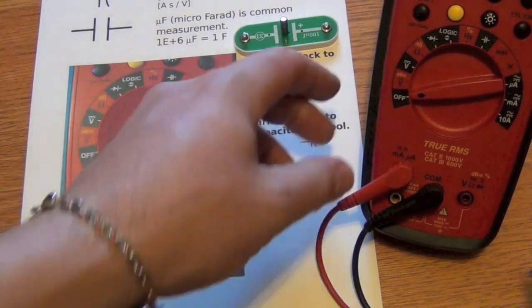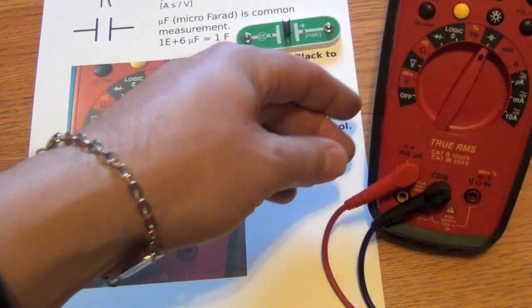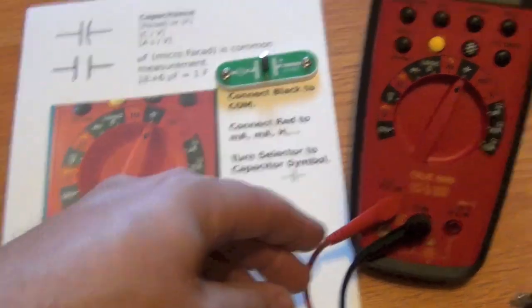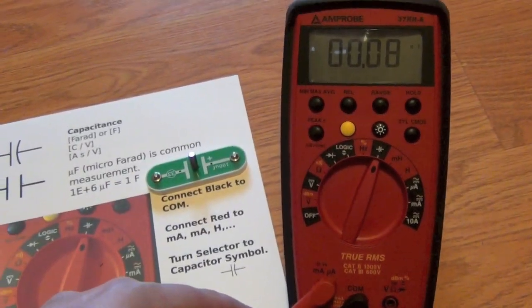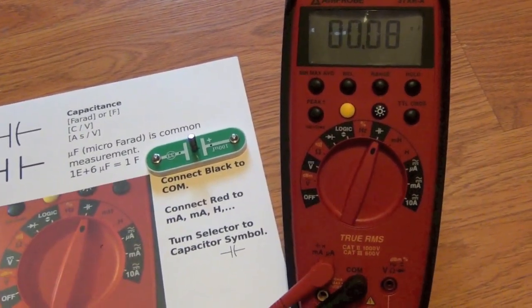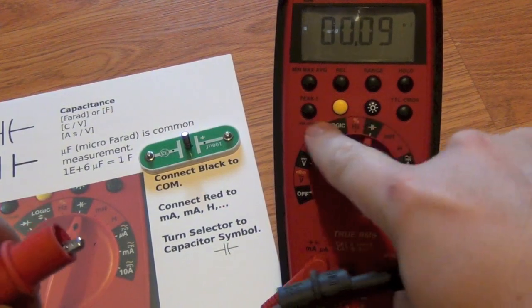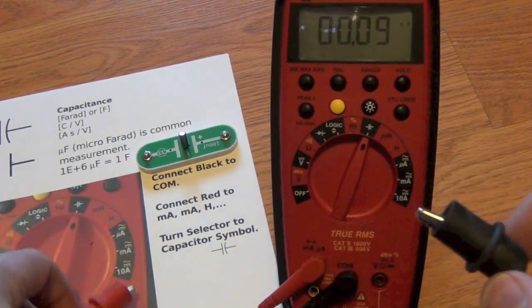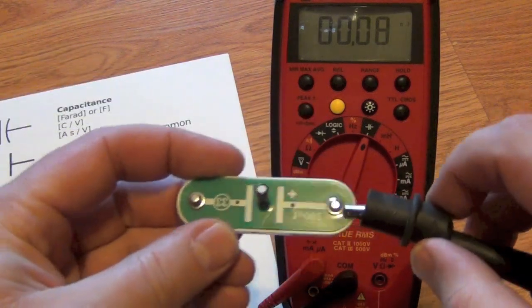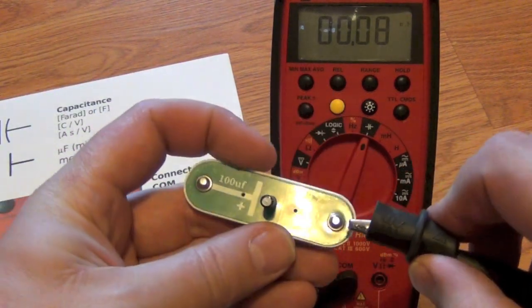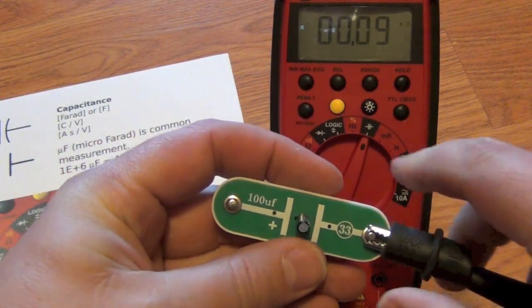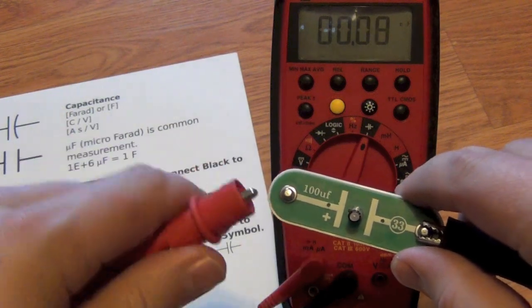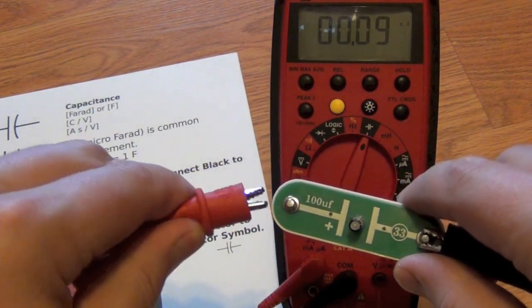If you hear the digital multimeter beeping at you, it could be that you've selected the wrong thing up here for the inputs. Pay attention to that beep. And then we're simply going to connect the capacitor to our leads, to our posts.